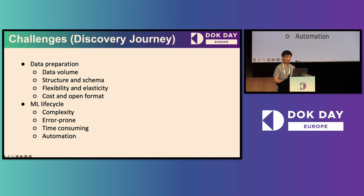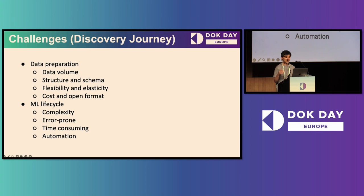The second challenge is the data type. There are structured, semi-structured, and unstructured data types. For most ML solutions, you need to deal with semi-structured and even unstructured data — what we call schema-on-read. But you may also need to handle structured data from time to time. We need a solution to handle these different data types without complicated data moving and transformation processes.